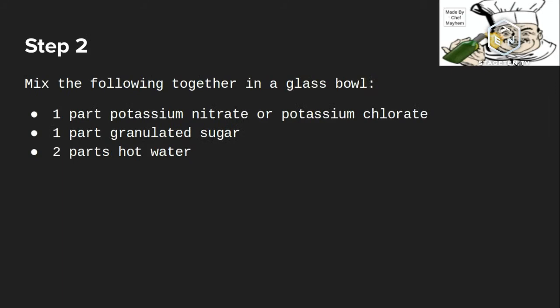Step two: mix the following together in a glass bowl: one part potassium nitrate or potassium chloride, one part granulated sugar, and two parts hot water. So if you do the math, one plus one plus two is four. One fourth is gonna be potassium nitrate or potassium chloride, one fourth is gonna be granulated sugar, and two fourths or one half is gonna be hot water.